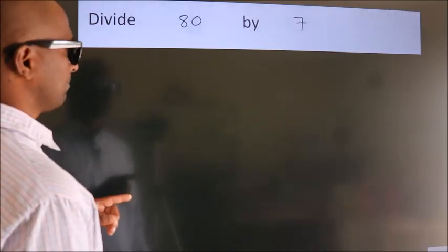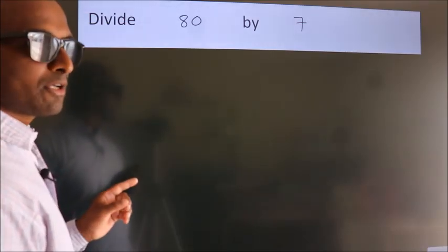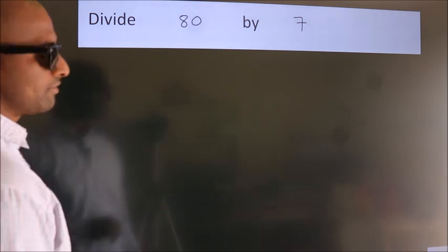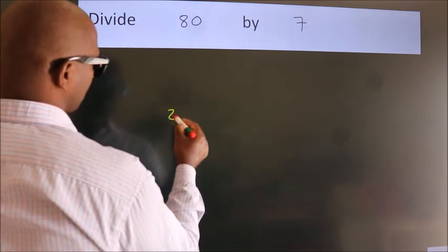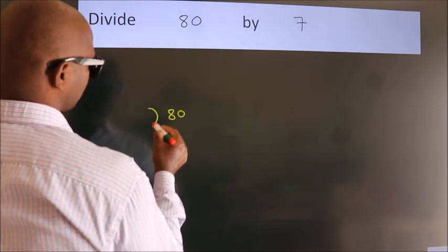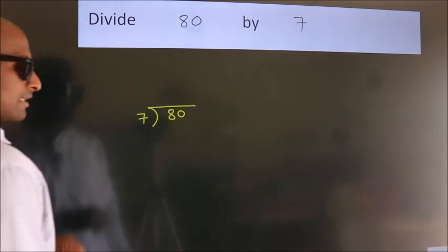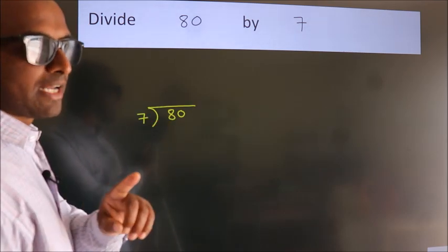Divide 80 by 7. To do this division, we should frame it in this way: 80 here, 7 here. This is your step 1.